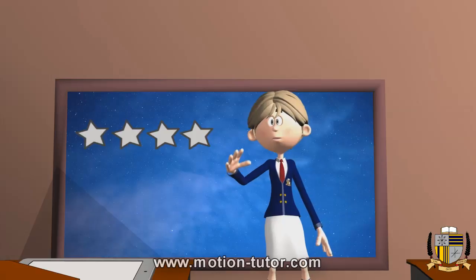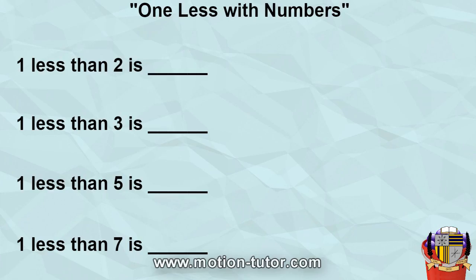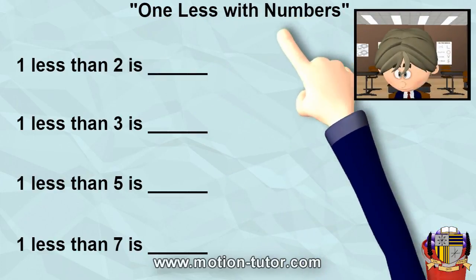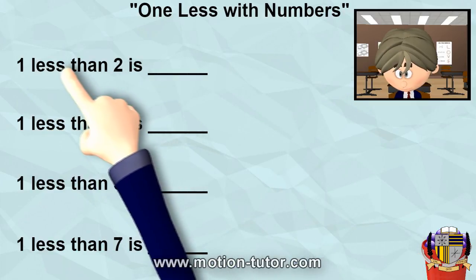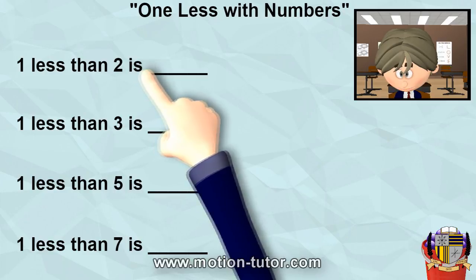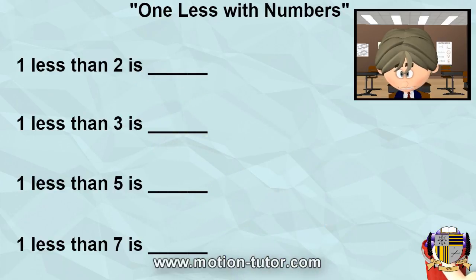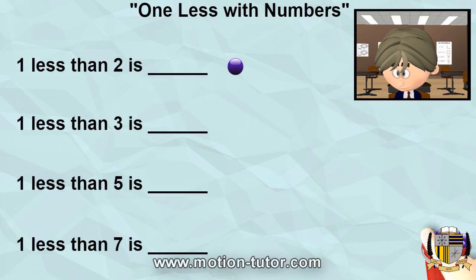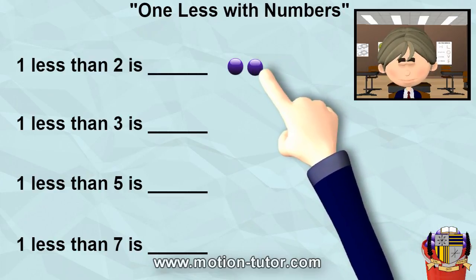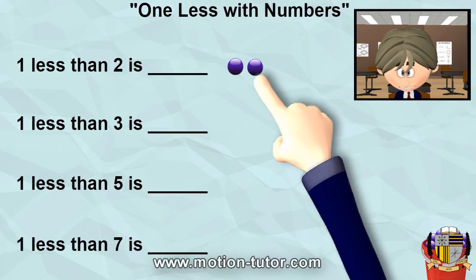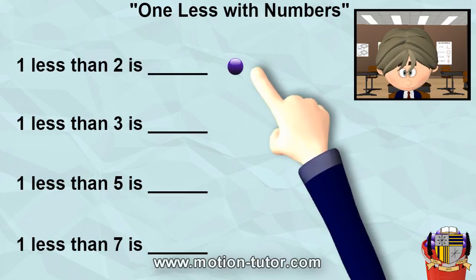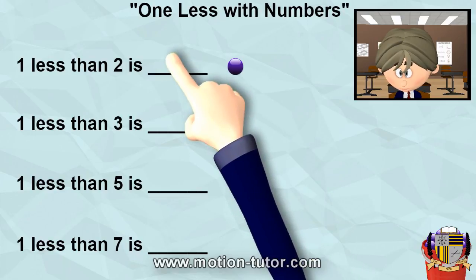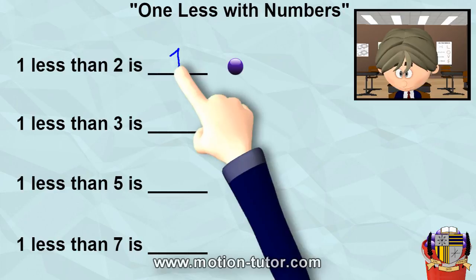Alright, let's go to my tablet for some more examples. This is one less with numbers. Let's read this: one less than two is... let's figure out what is one less than two. I'm going to get my marbles here, and we have two. One less will be to remove one, and what are we left with? Just one. One less than two is just one.